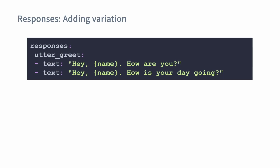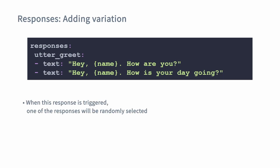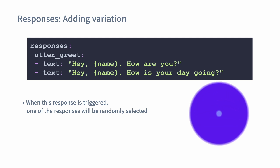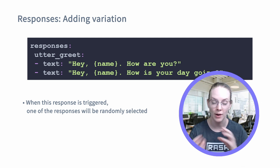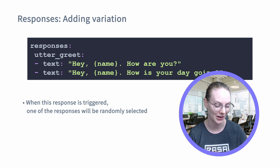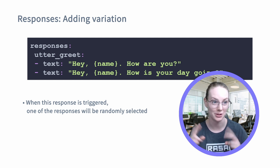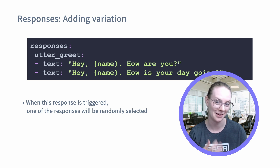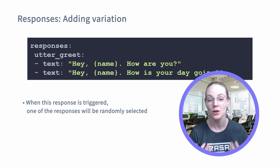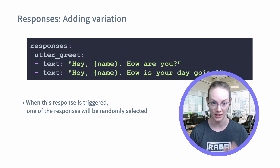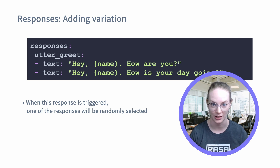You can also add a little bit more variation. If you add multiple texts for a specific utterance, one will be randomly selected. If you saw our April Fool's project where the bot would respond with an animal call when you sent an animal call, that was done using this — just a bunch of responses, and one was randomly selected at each turn.